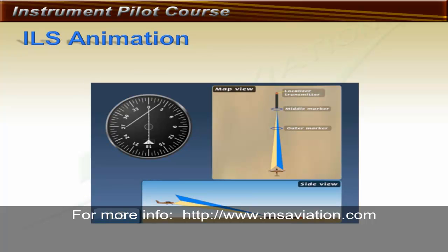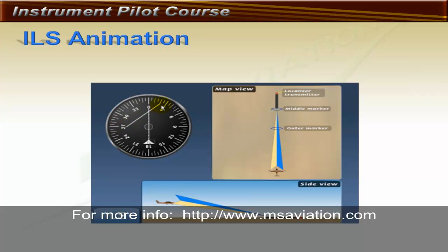The ILS animation begins with the map view showing the localizer transmitter — an antenna array at the end of the runway that shoots out two beams of energy. There is usually a middle marker, a fan marker, and an outer marker. The CDI shows centered when on track on the runway centerline. The glide slope centers when the aircraft intercepts the glide slope signal. Here the aircraft is on centerline but below the glide slope, causing the needle to deflect fully up, telling the pilot to fly up to get on glide path.